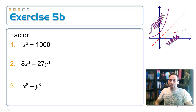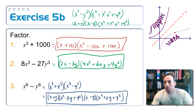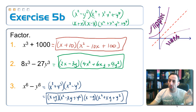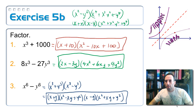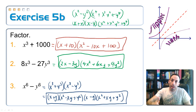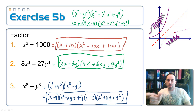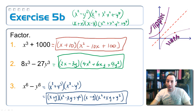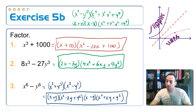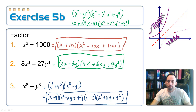Let's see how you did. On the first one — very straightforward sum of two cubes. The cube root of x cubed is x, and the cube root of 1000 is 10. So the first factor is x plus 10. Then square x to get x squared; since this one's plus, the next is minus; 10 times x gives 10x; and the last term is 10 squared, which is 100.